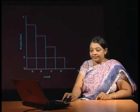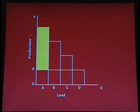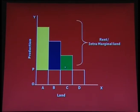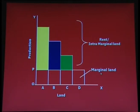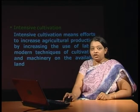The situation will be more clear with the help of a diagram. Here, each bar is showing the production of each land. OP is the production of marginal land, that is D. The area above OP shows the rent for each land. For A, rent is shown by green colour; for B, rent is shown by blue colour; and for C, rent is shown by green colour. The land which earns rent is known as intra-marginal land and the land which does not earn rent is known as marginal land. In the case of extensive cultivation, a producer will earn rent due to difference in fertility of land.